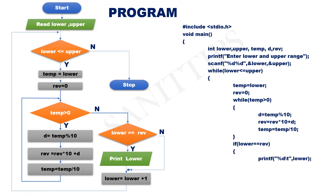In the no part, there is nothing. After the if body, the next statement is lower equal to lower plus 1. This is the end of the outer loop, so close the outer while. Go to the no part — it is stop — so close the main function. This inner loop is inside the outer loop. This is the outer loop and this is the inner loop. So this is the program to generate palindrome numbers between a given range.